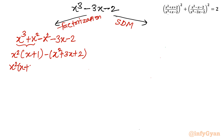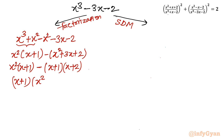Factoring x² + 3x + 2 = (x + 1)(x + 2). So we have x²(x + 1) - (x + 1)(x + 2). Taking (x + 1) common gives (x + 1)(x² - x - 2). Applying the quadratic formula to x² - x - 2: x = (1 ± √(1 + 8))/2 = (1 ± 3)/2.